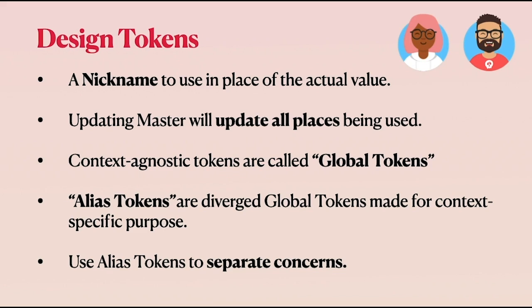So just to summarize: design tokens are like a nickname used in place of the actual hard-coded value. Once the token is created, updating that token master will update all the places being used. Among these tokens, the context-agnostic ones are called global tokens, while alias tokens are the ones diverged from global tokens and made for context-specific purposes. Global tokens are like the atoms of the visual style values, and alias tokens are made context-specifically and reference other tokens.